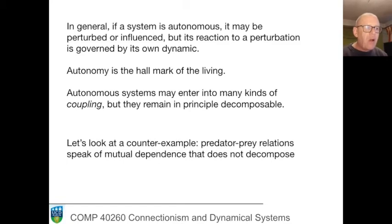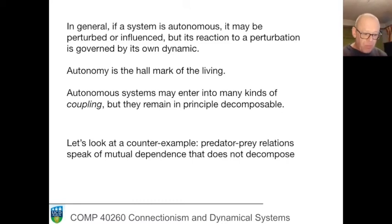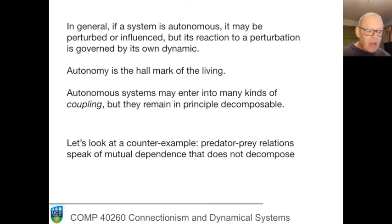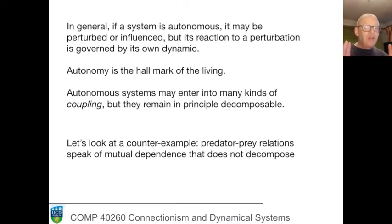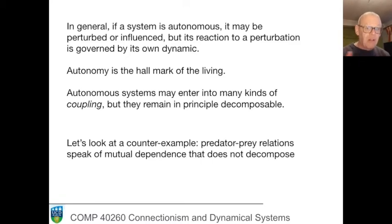We're going to look at a counter-example to this decomposability — a dynamical system which takes as its state variables the population of lynxes and hares. It's a predator-prey model in an area and models their co-variation over time. What's important to note is that the manner in which the system is delineated doesn't allow for the predator or the prey to be taken out of the relationship. The autonomy of this system lies in the predator-prey relationship, not in the predator and the prey individually.